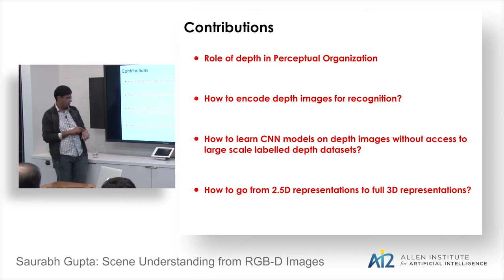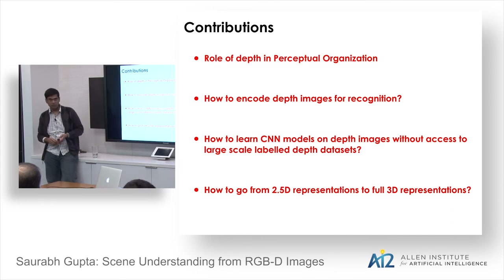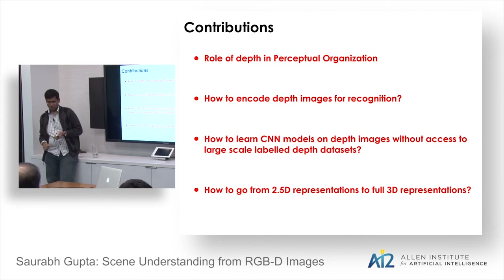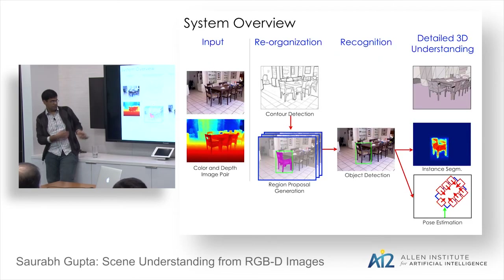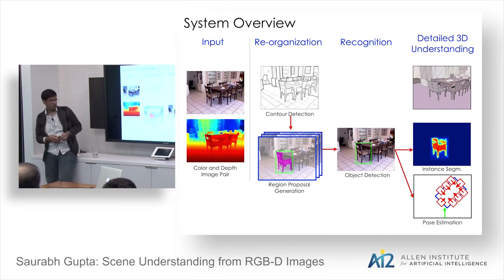To summarize the RGBD scene understanding section, we covered: the role of depth in perceptual organization, encoding depth images for recognition, training CNNs on modalities without sufficient labeled data, and going from 2.5D to full 3D representation. Most of the source code is online.